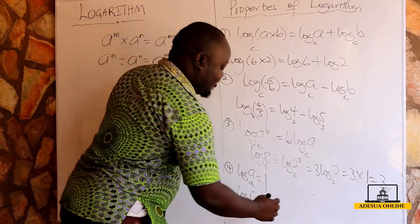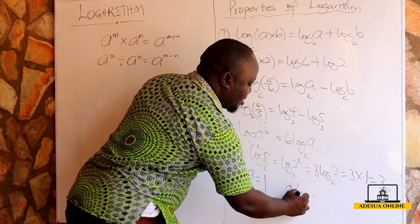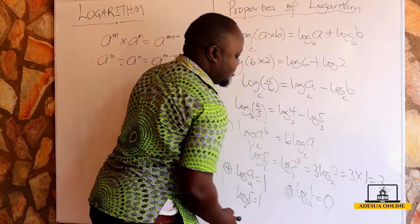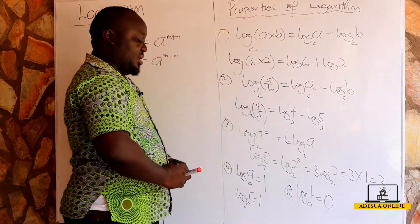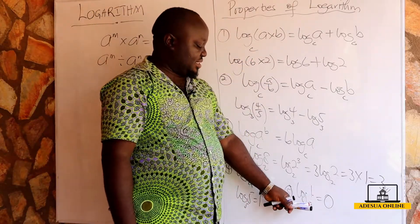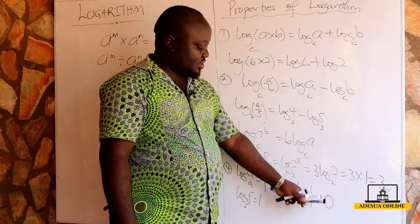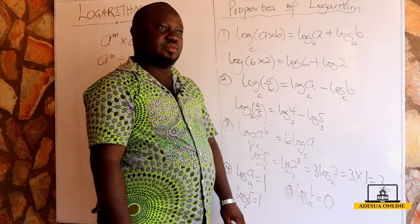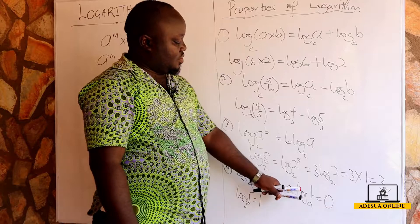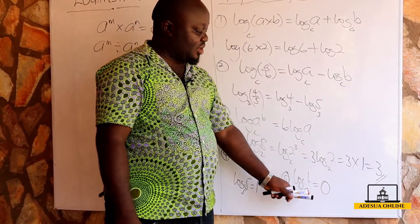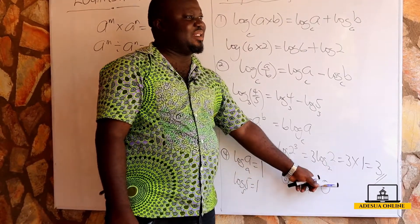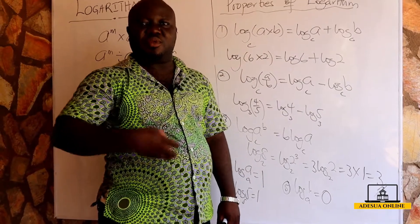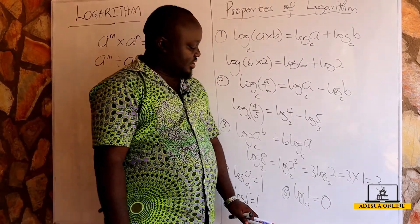The fifth law states that log one to the base a is equal to zero. Log one to any base is zero, because a raised to the power zero is equal to one. So the logarithm of one to any base gives the power zero, which equals one.